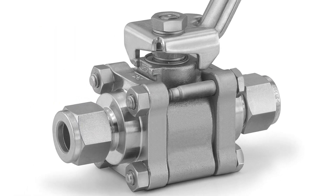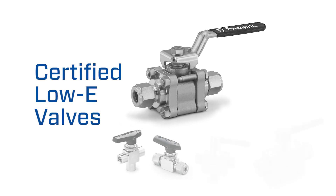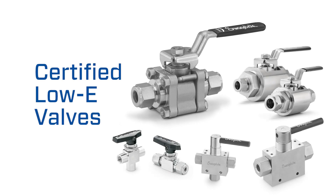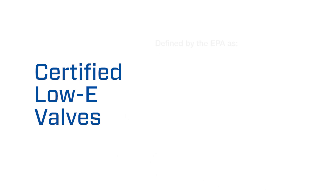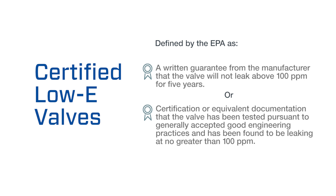These emissions can be prevented by replacing leaking valves with certified low-e valves. The EPA defines low-e valves in two ways: the first is that the valve comes with a written guarantee from the manufacturer that the valve will not leak above 100 parts per million for five years. The second is certification or equivalent documentation that the valve has been tested pursuant to generally accepted good engineering practices in good faith, duplicating process conditions and leaking at no greater than 100 parts per million.